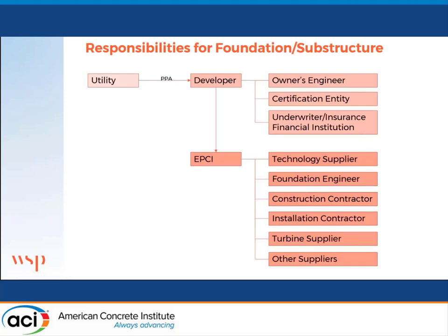In terms of the responsibilities, the first one on the left is the utility — the end users. They are driving everything, but they're not necessarily the owners. They typically have a power purchase agreement with a developer, and the developer may or may not be the owner of the entire construction or the wind farm itself. The developer has their own group of owners and engineers, and the certification entity like DNV or ABS are directly working with the developer. They also have underwriters, insurance, and financial institutions they have to report to and make the case that everything is secure and financeable.